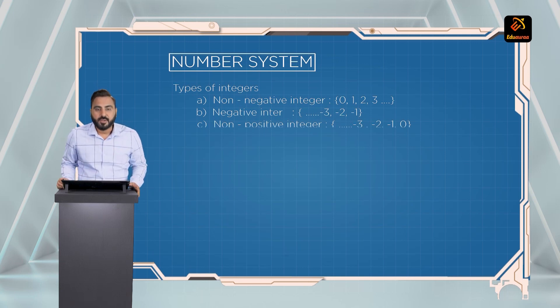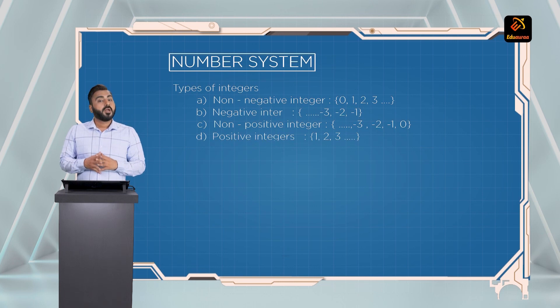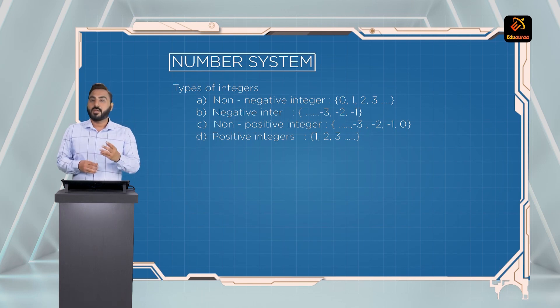Let's move on to the next type — non-positive integers. When we say non-positive integers, those integers include 0. So non-positive integers include negative numbers with 0. Then we have positive integers — positive integers start with 1. So 1, 2, 3, up to infinity — those numbers are called positive integers.